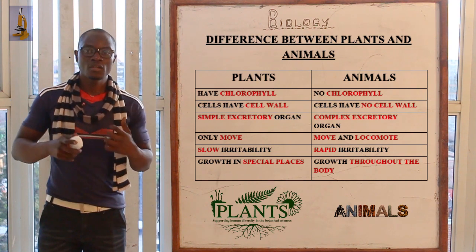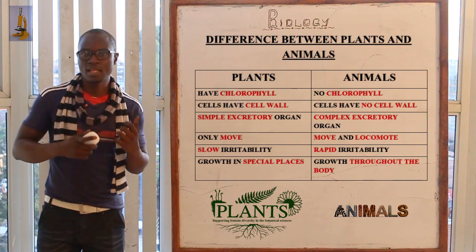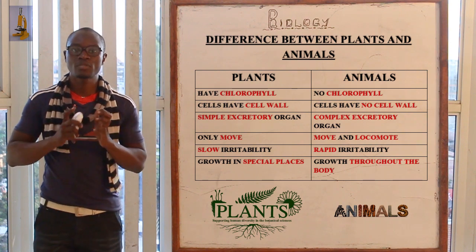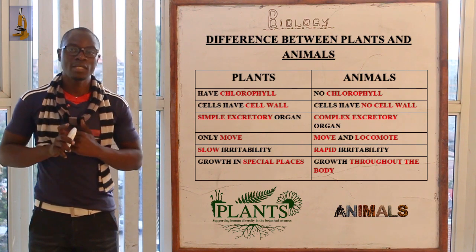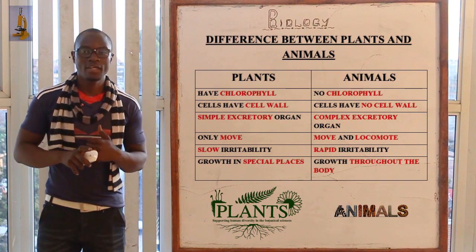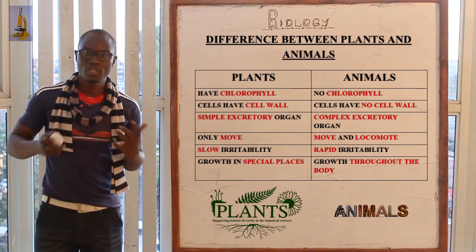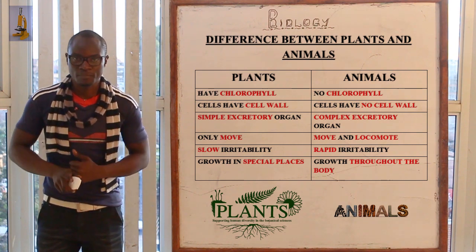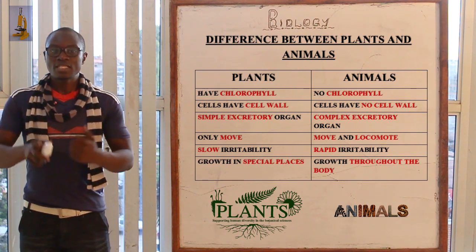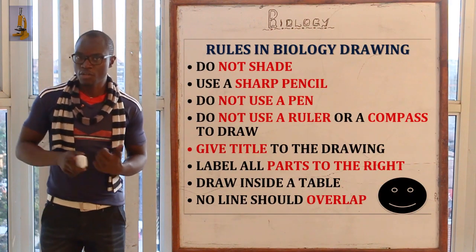Also, in plants, growth occurs only in the shoots and root tips or in specific regions, while in animals growth occurs throughout the body.